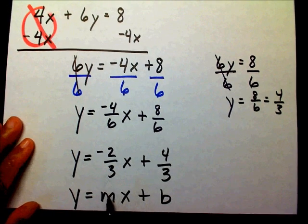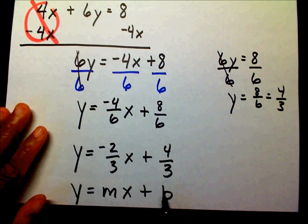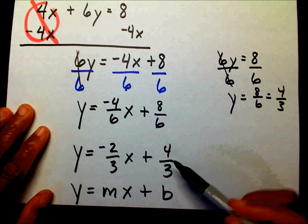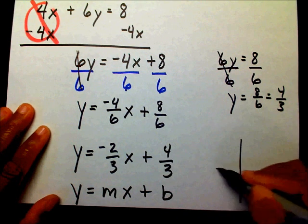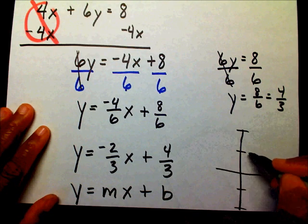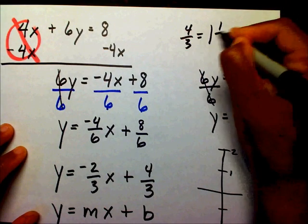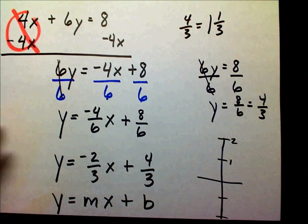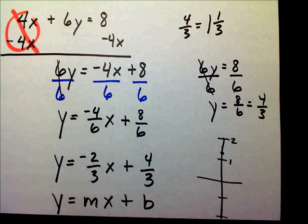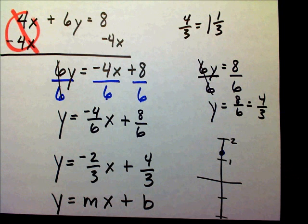My slope is negative 2 thirds and my y-intercept is 4 thirds. So my line is going to cross the y-axis at 4 thirds. We know that 4 thirds equals 1 and 1 third, so if I were to draw this line, it's going to cross at about this point right here.